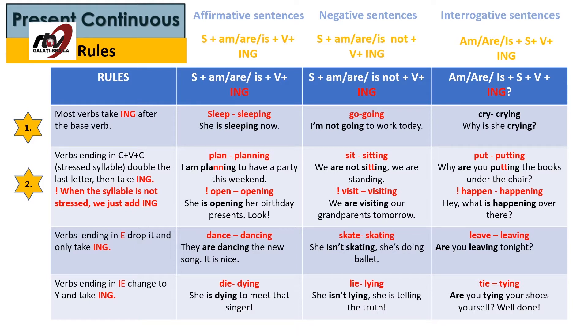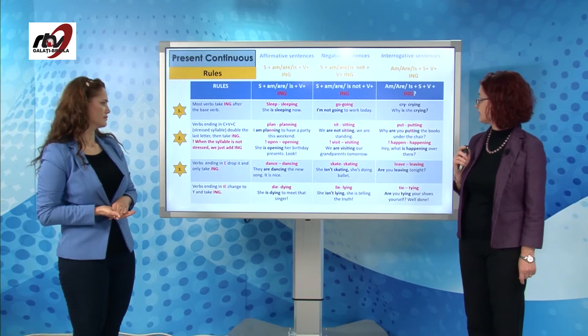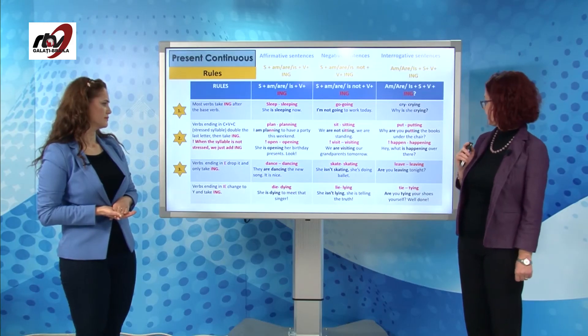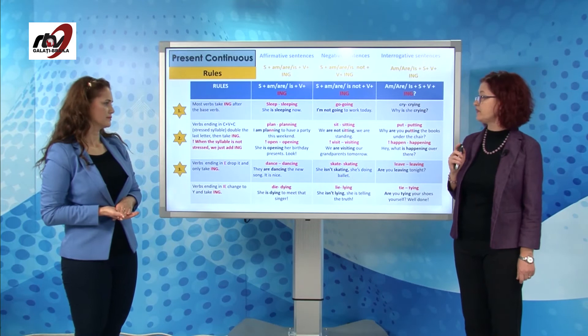Rule number three: verbs ending in E drop the E and only take -ing. The case of dance → dancing, skate → skating, and leave → leaving.